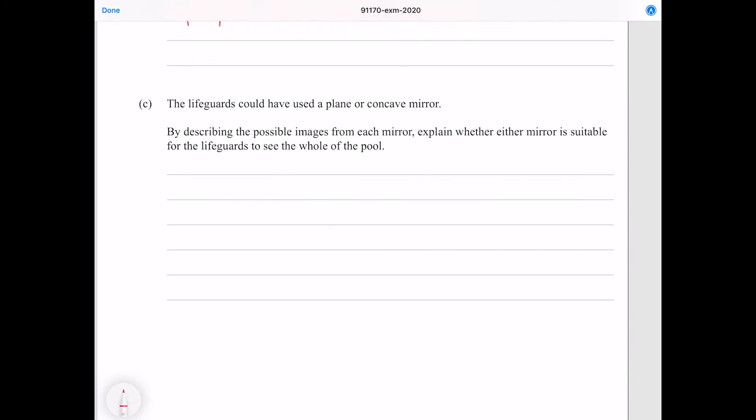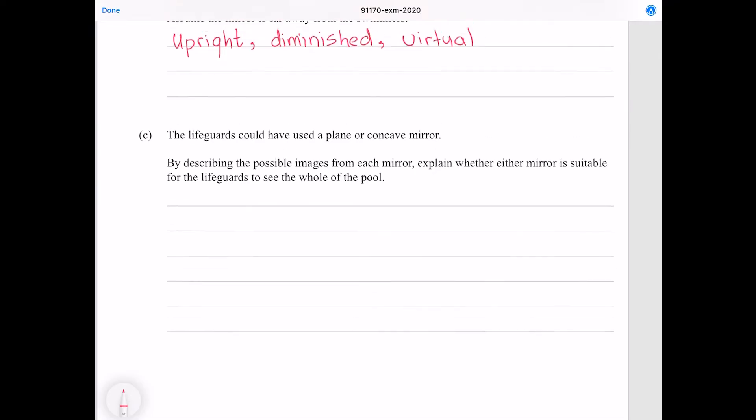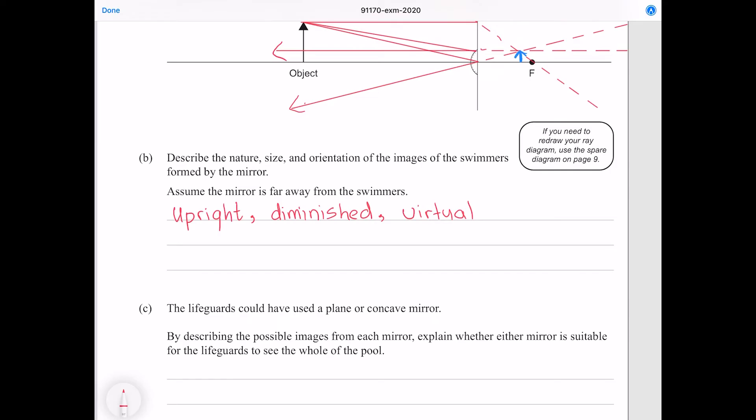Question C: The lifeguards could have used a plane or concave mirror. By describing the possible images from each mirror, explain whether either mirror is suitable for the lifeguards to see the whole of the pool. The main advantage of the convex mirror is that we're going to get an increased field of view. Because of how the mirror is shaped we're going to get a greater than 180 degree wrap around view.